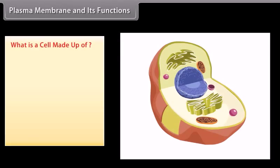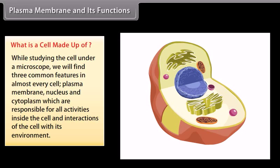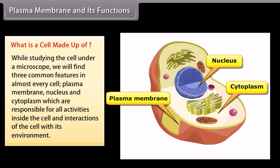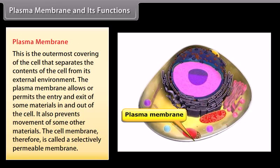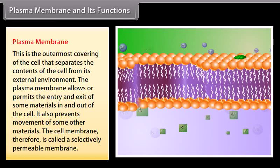Plasma membrane and its functions: Studying the cell under a microscope reveals three common features in almost every cell — plasma membrane, nucleus, and cytoplasm — which are responsible for all activities inside the cell and interactions of the cell with its environment. The plasma membrane is the outermost covering of the cell that separates the contents of the cell from its external environment. It allows or permits the entry or exit of some materials in and out of the cell while preventing movement of some other materials, and is therefore called a selectively permeable membrane.